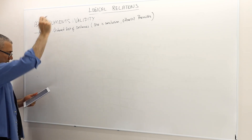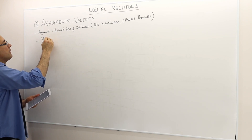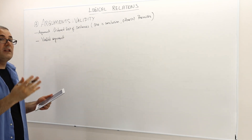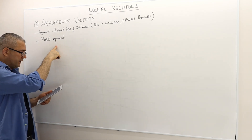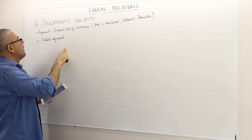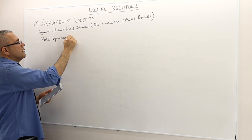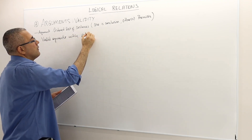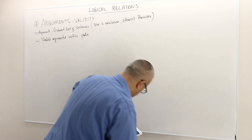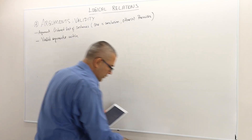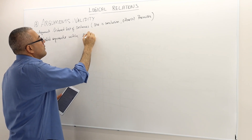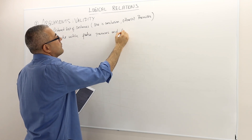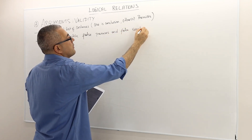There are valid arguments. We're going to talk about what an argument is and what a valid argument is — I'm going to define it a little later. There are valid arguments with false claims, with false premises and false conclusions.